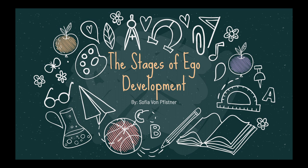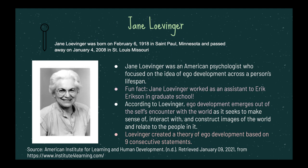Jane Loevinger was born on February 6, 1918 in St. Paul, Minnesota, and passed away on January 4, 2008 in St. Louis, Missouri. She was an American psychologist who focused on the idea of ego development across a person's life. As a fun fact, Jane Loevinger worked as an assistant to Erik Erikson in graduate school, so you'll see a lot of similarities within her stages of ego development to his theories as well.